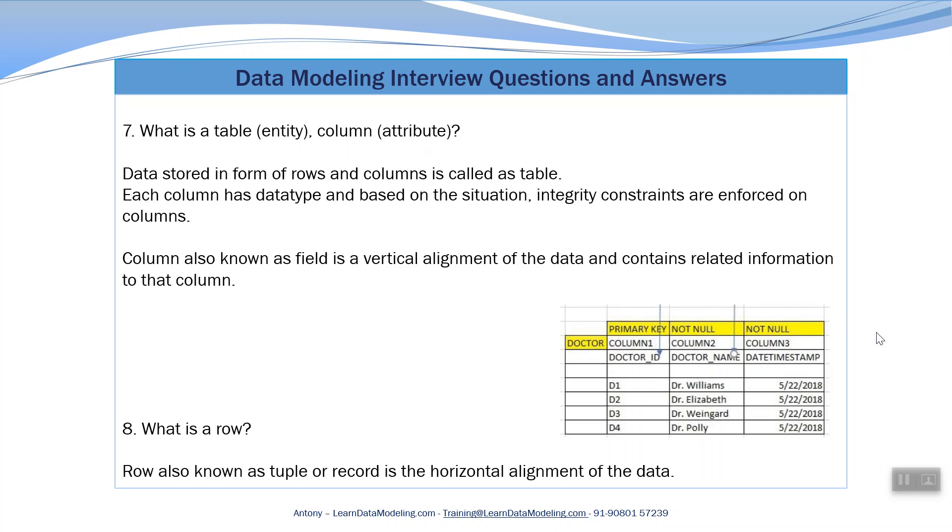I have a small table here which contains three columns: column one, column two, column three. I have some information about the data - D1, D2, D3, D4 - these are four records. In D1 you can see Dr. Williams and there is a datetime stamp here.